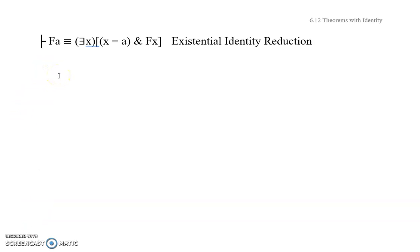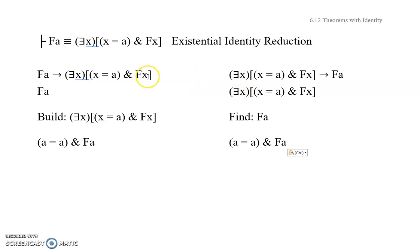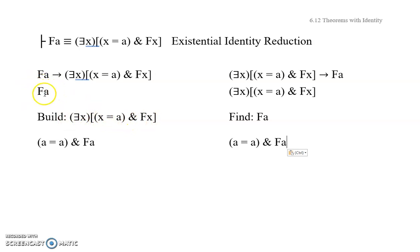Hopefully you've had a chance to figure it out. You would look something like this. First of all, you notice that the main connective is a biconditional, and so you've got the left-to-right direction and the right-to-left direction. Now on the left-to-right direction, you would assume FA, and from that you would have to try to get this whole thing. If we picture this whole thing without the existential quantifier, it's really just this guy. And since you've already got this, that's easy enough, and you can get this using the reflexivity of identity.